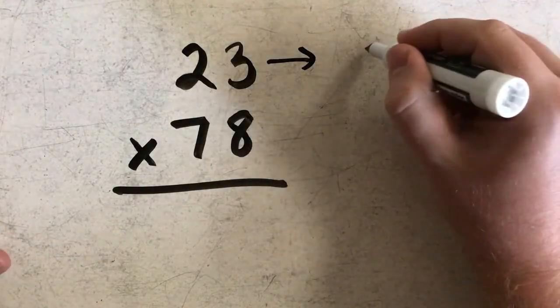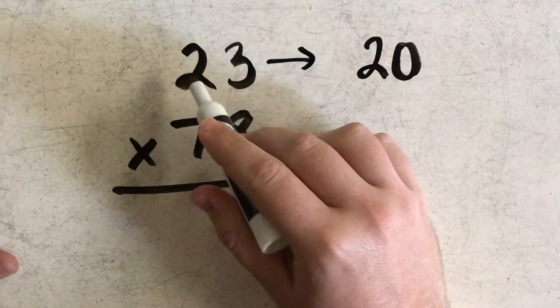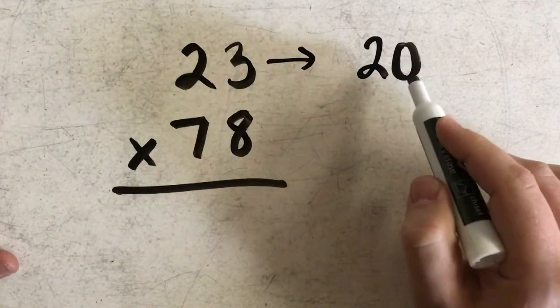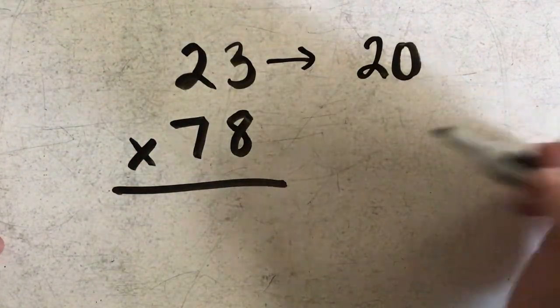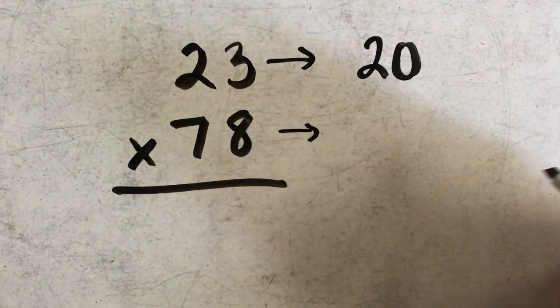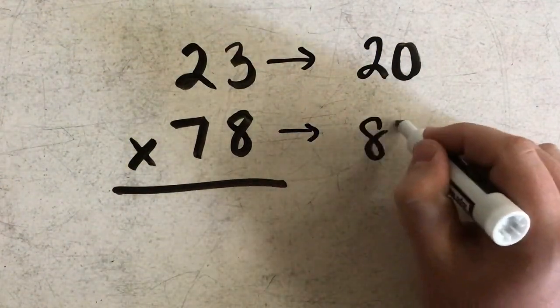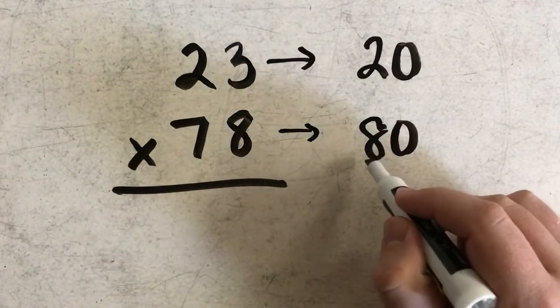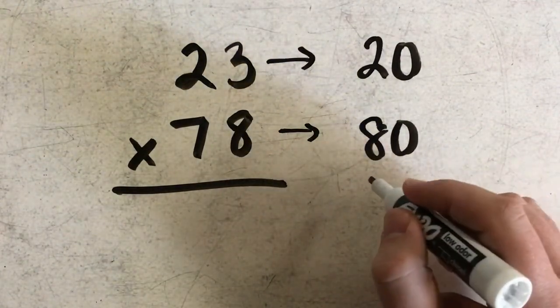So I'm going to round 23 to the nearest 10. That would be 20. 3 would round down, so 2 would stay the same, and 23 would round to 20. And 78 would round to 80. So 8 would round the 7 up to an 8 to give me 80.